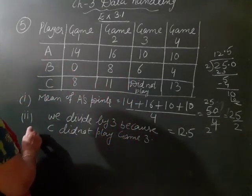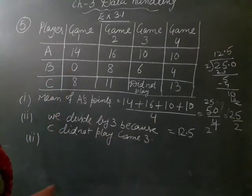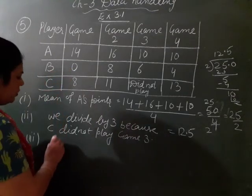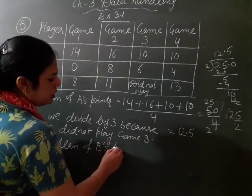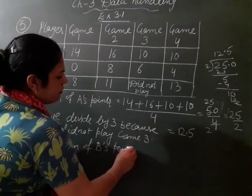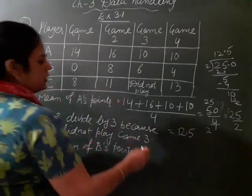Now you have to find the mean of point B player. So mean of B's point, B ke jo points hai. Uske average nikaal hain, mean kaise nikaal hain?